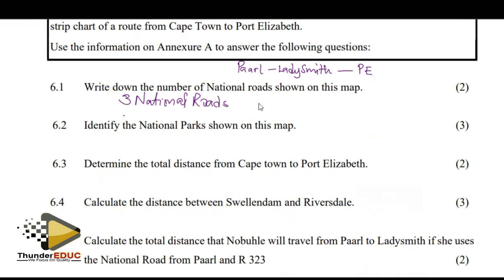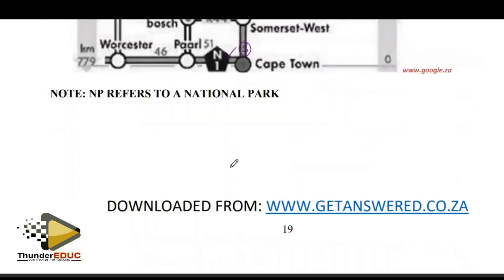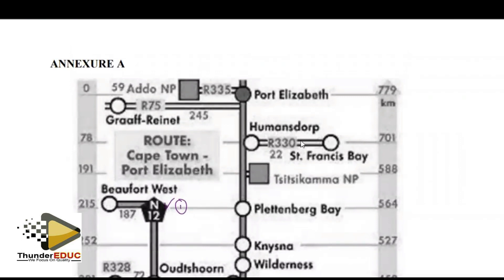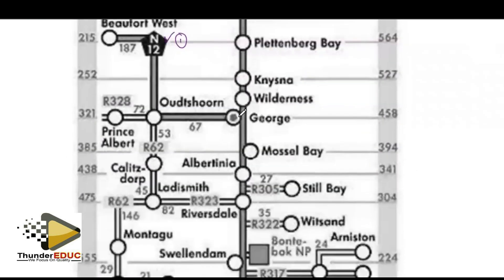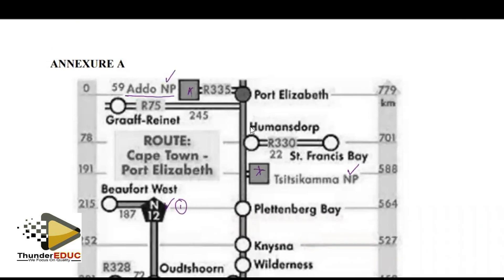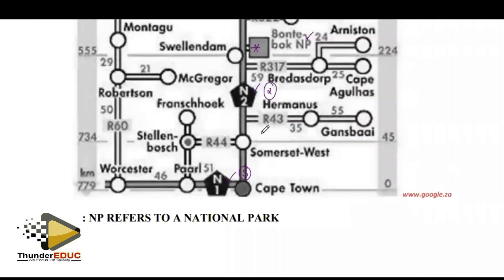Identify the national parks shown on this map. Under the map it says: NP represents or refers to a national park. So how many NPs do we see? There's one here — so one NP. We've got another NP here — so two so far. We come down and look for NP. They're represented by these boxes. When you see a box like that, there's a national park. Those boxes identify the national park.